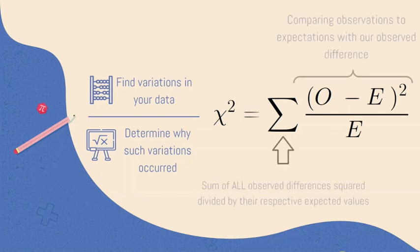This is done by comparing our observations to our expectations. Our numerator has the observed difference, literally our observed minus expected outcomes, which we would expect if the null hypothesis is true, which is divided again by what we expected as our outcomes.